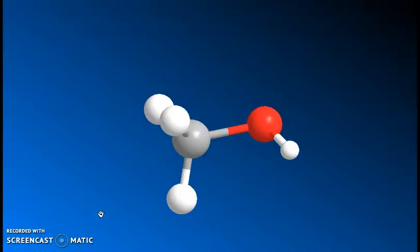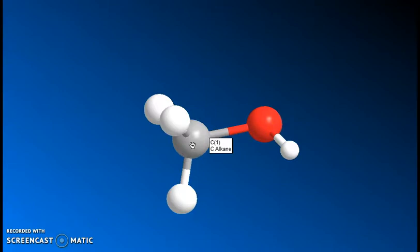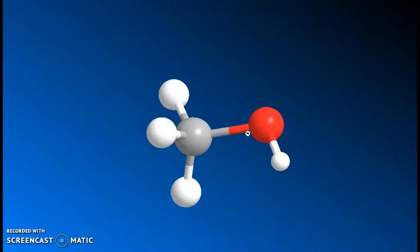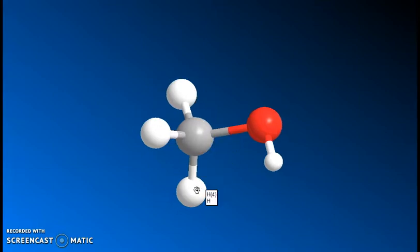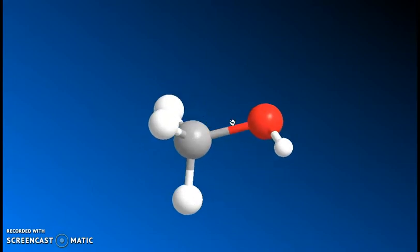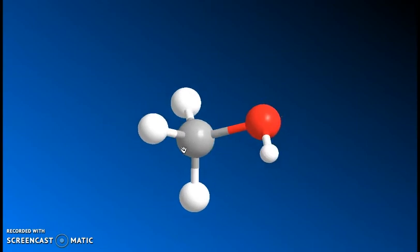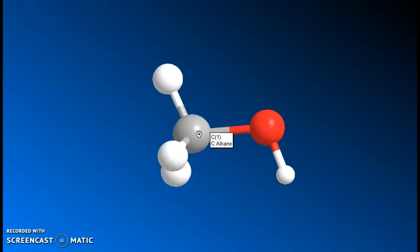I can do the same thing for methanol. In this case, I've replaced my nitrogen with an oxygen. We still have our tetrahedral sp3 hybridized carbon bonded to three hydrogens and one oxygen. And you'll notice that even though the oxygen is only bonded to two other atoms, it is in a bent shape around this oxygen.